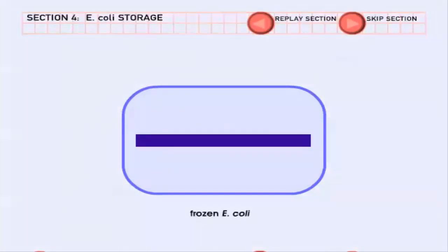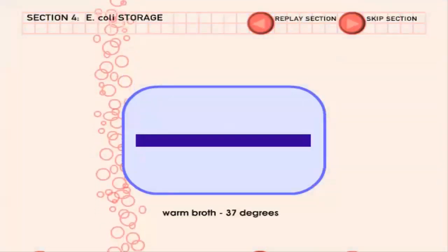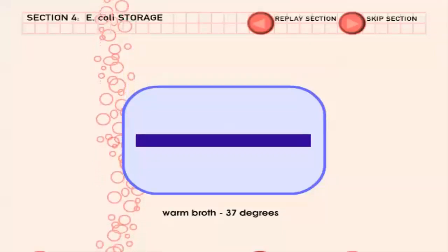When researchers are ready to retrieve DNA from the library, they revive the cells by bringing them back up to 37 degrees centigrade, gut temperature. To make many copies of the human DNA, the E. coli cells act as copiers.